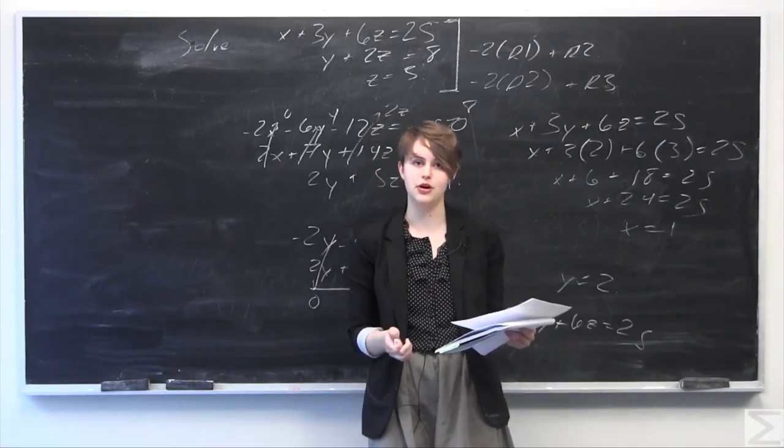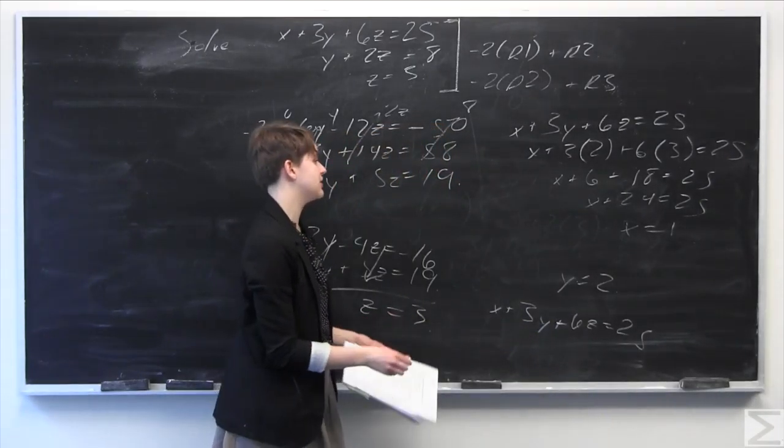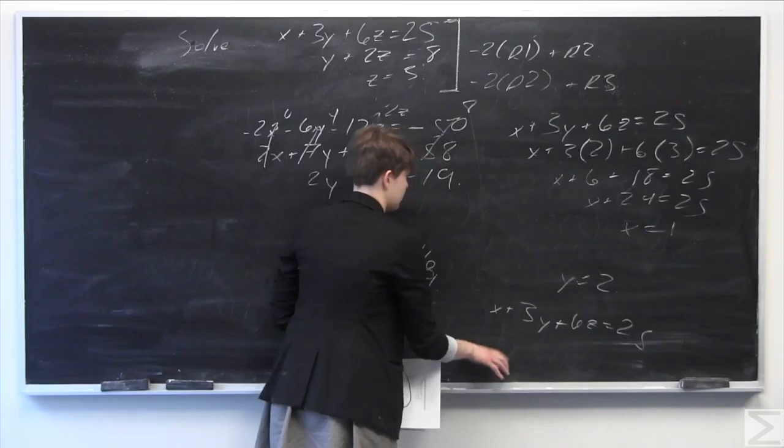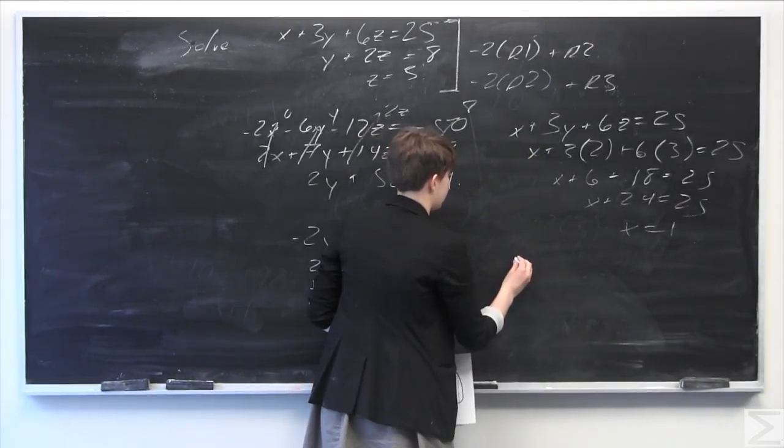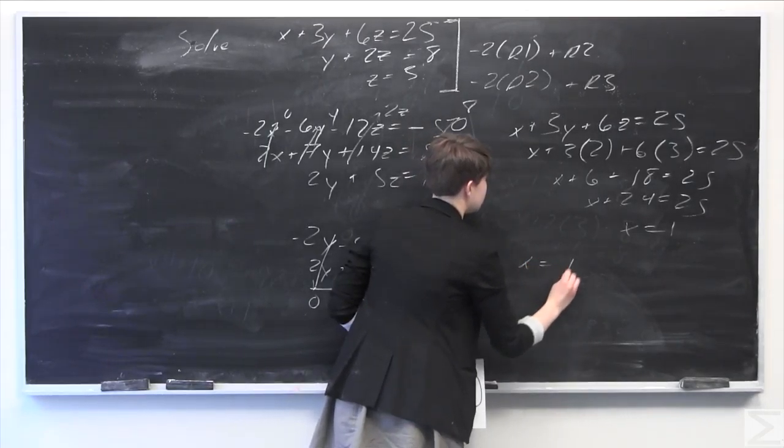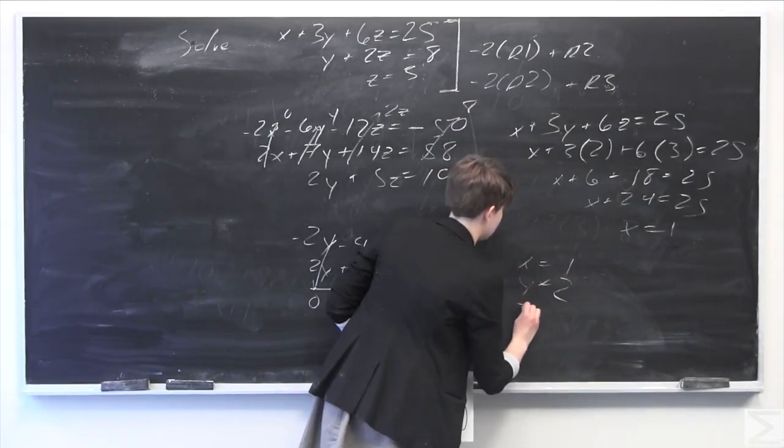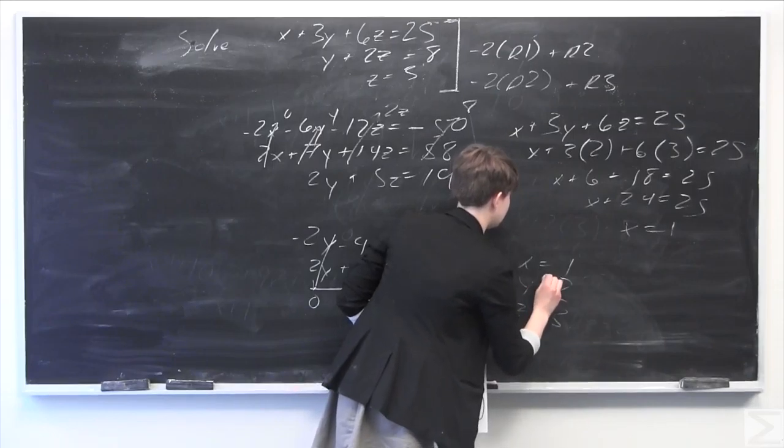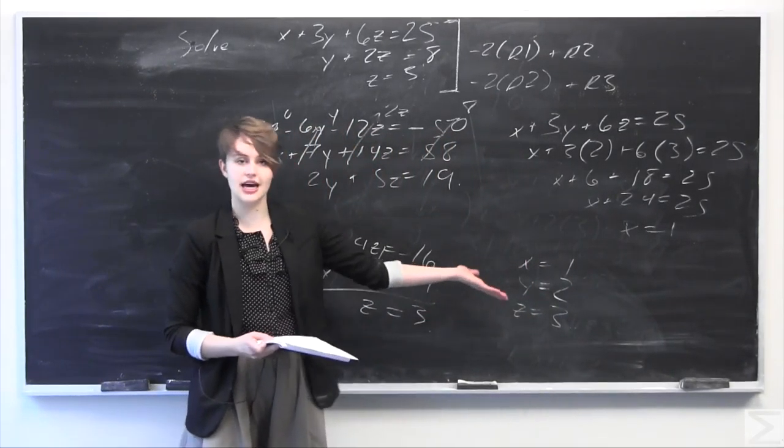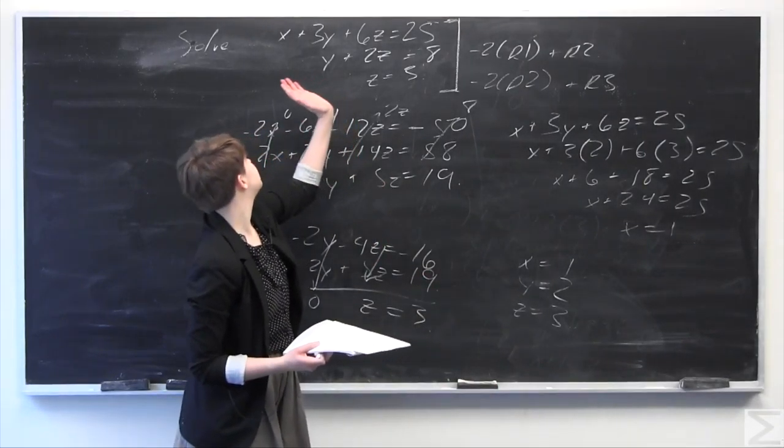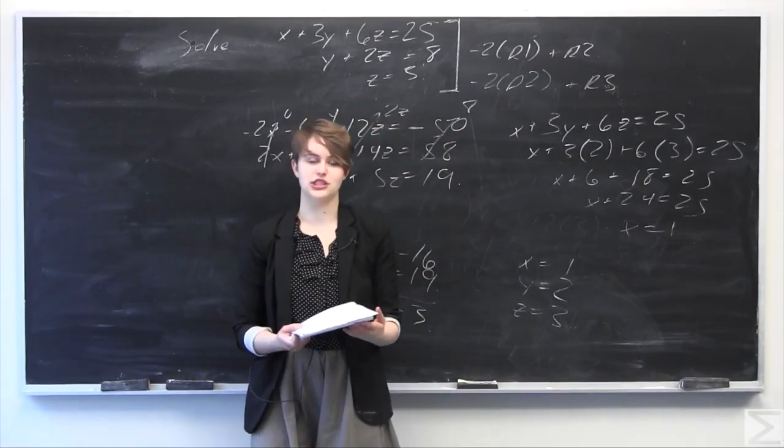Using elementary row operations, we've solved our system of equations. We're left with x equals 1, y equals 2, and z equals 3. Our system is consistent because it has exactly one solution.